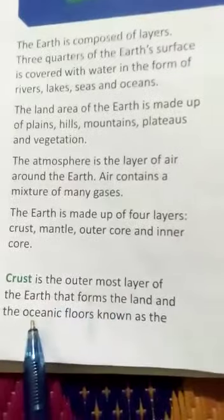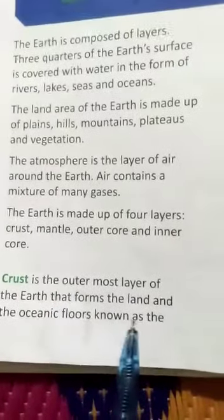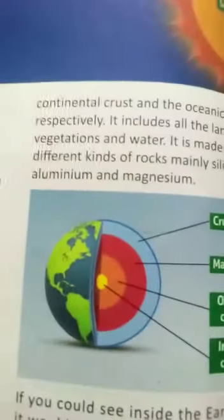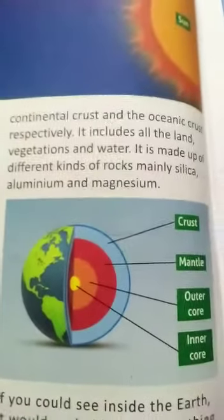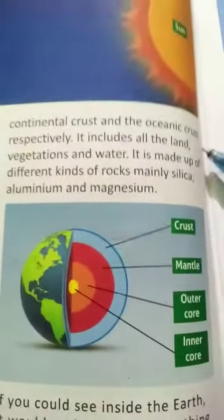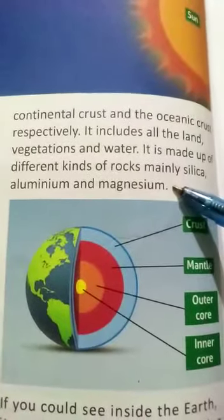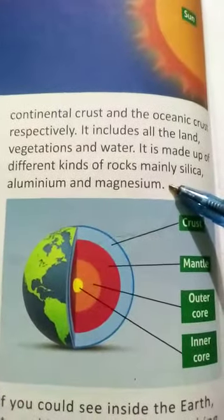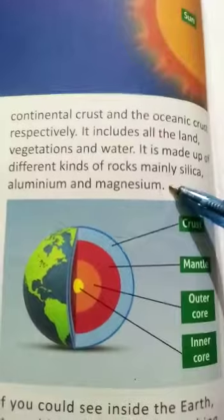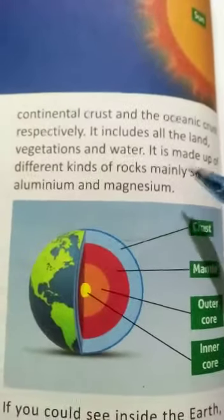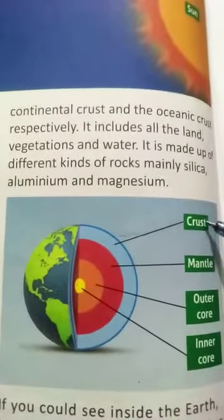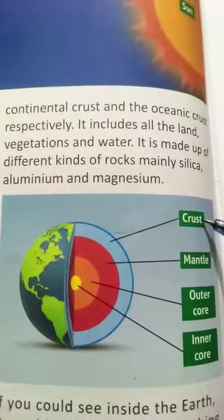known as the continental crust and the oceanic crust respectively. It includes all the land, vegetation, and water. It is made up of different kinds of rocks, mainly silica, aluminum, and magnesium. In this first layer of the Earth, we are discussing that it is the outermost layer.